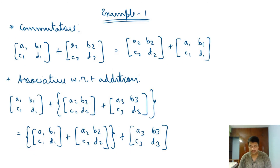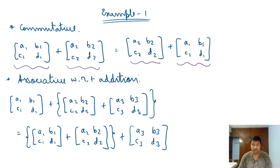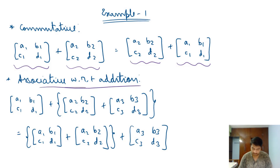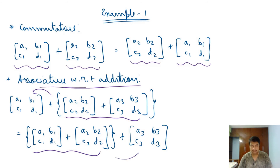Addition is commutative: v₁ + v₂ equals v₂ + v₁, which is satisfied by our addition rule. Addition is also associative: (v₁ + v₂) + v₃ equals v₁ + (v₂ + v₃), and this is indeed satisfied.